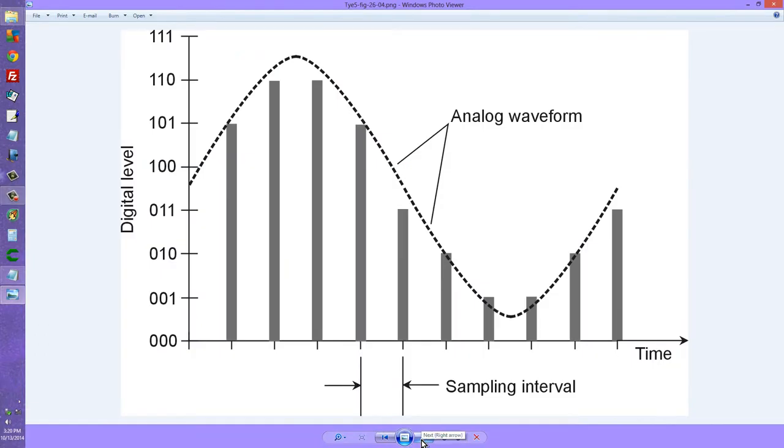What I'd like to talk about here comes out of chapter 26, and it's an illustration, figure 26-4, that shows how analog-to-digital or digital-to-analog conversion might work. Imagine an analog waveform, analog meaning continuously variable.